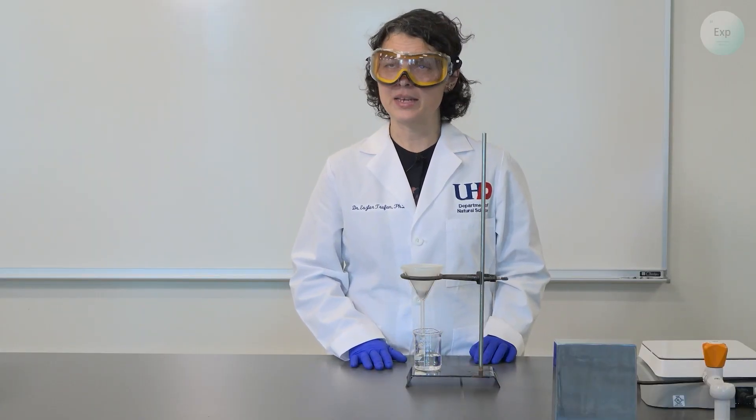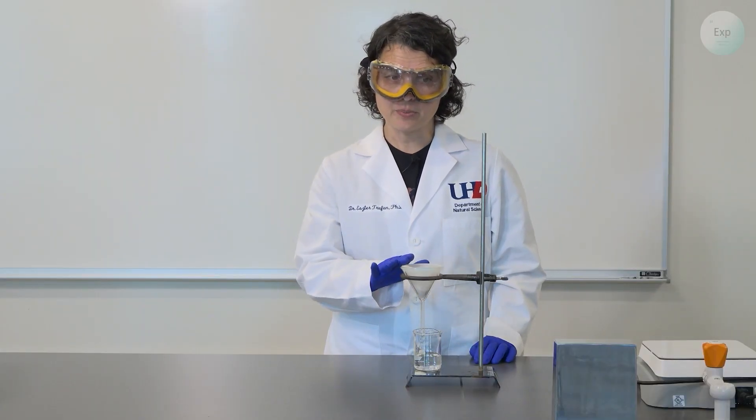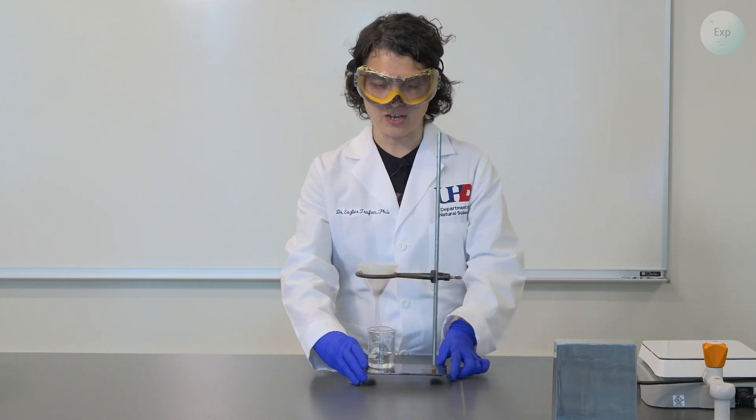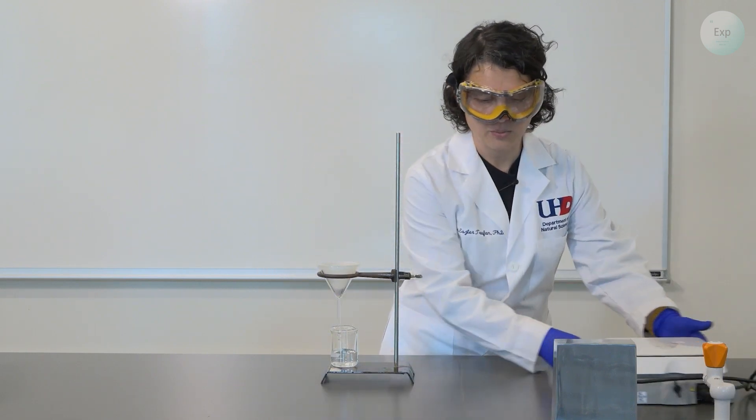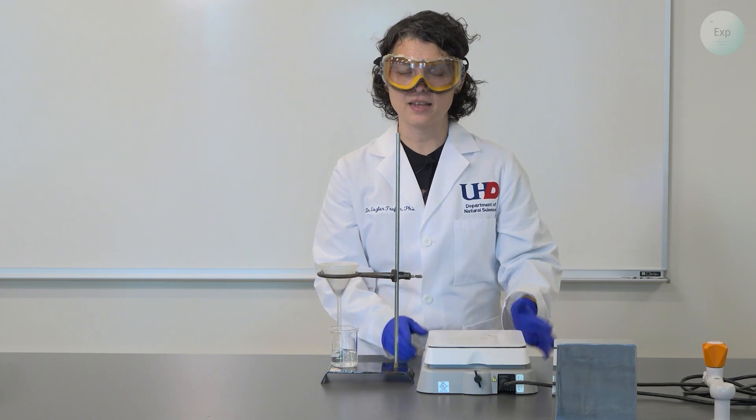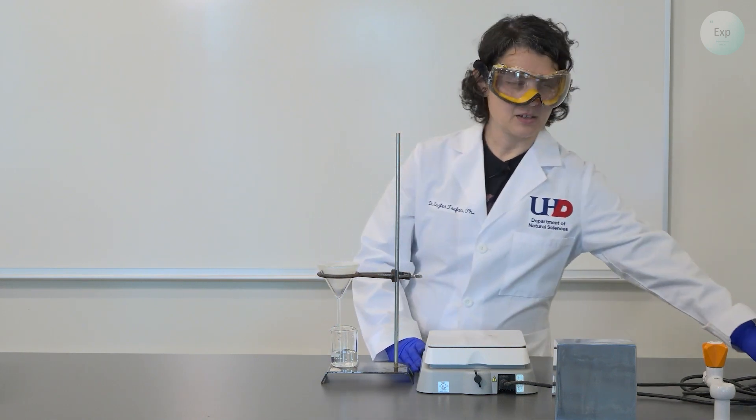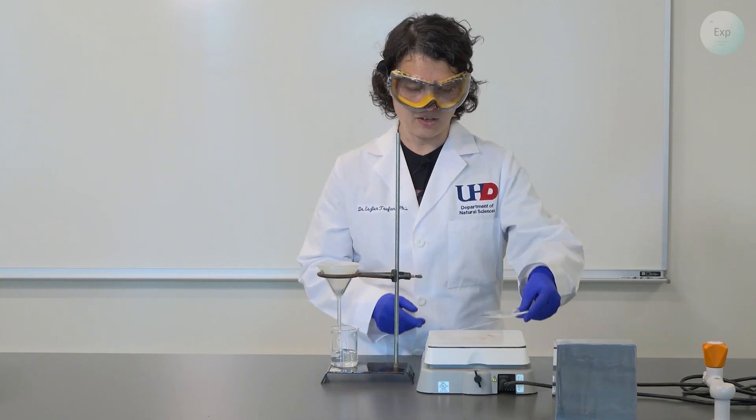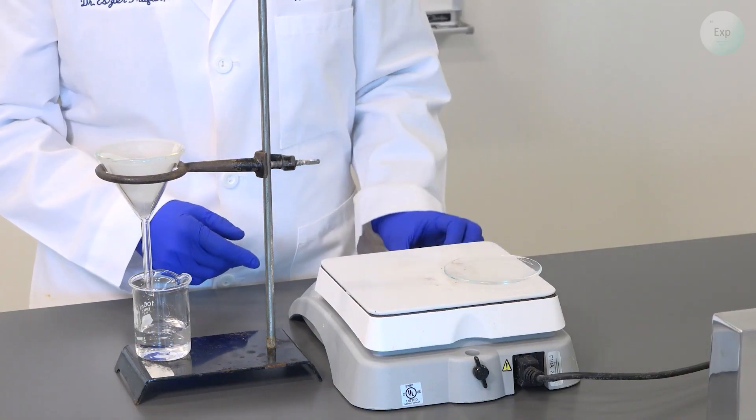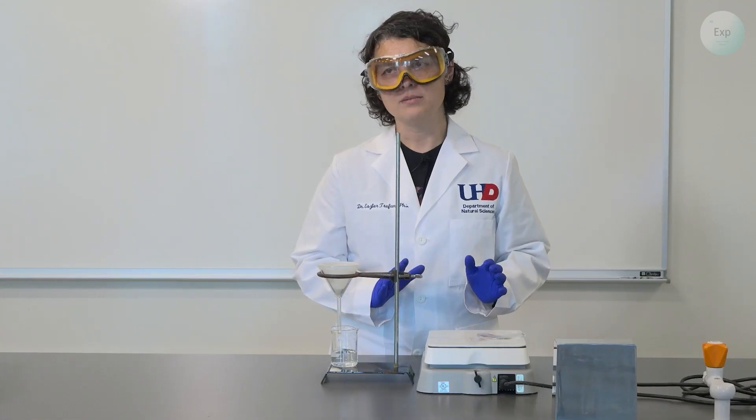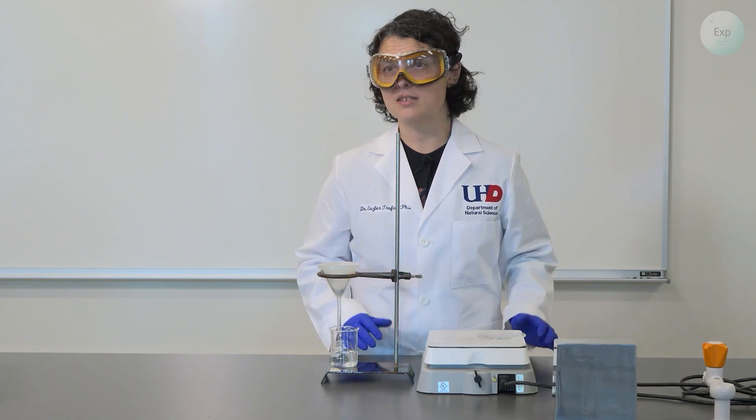From here we can start the extraction process. The filter paper needs to be dried. So for that, we will need a source of heat, and for us it will be a hot plate. To get it dry, we're going to place it on a watch glass on top of a hot plate, and this should be set to a medium-low temperature so that it does not burn the paper.